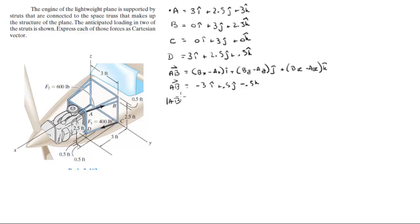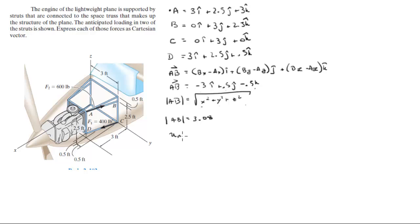The magnitude of this vector can be found by taking the square root of the components. Plugging each of these three values into the formula, the magnitude comes out to be 3.08. So the unit vector AB is equal to the vector over the magnitude, which works out to be negative 0.974i plus 0.162j minus 0.162k.